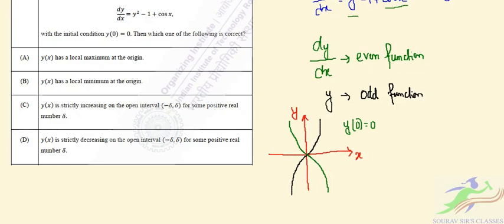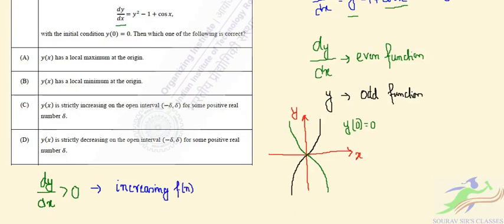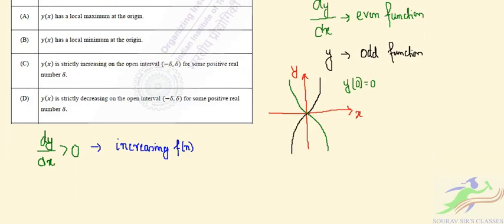So options A and B are not correct. Now I have to check options C and D. Option C says y(x) is strictly increasing on the open interval. We have to find whether dy/dx is greater than 0, which would indicate an increasing function.